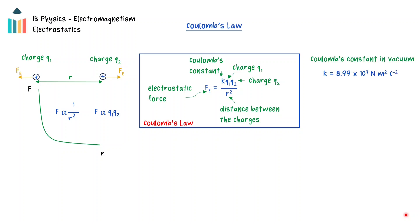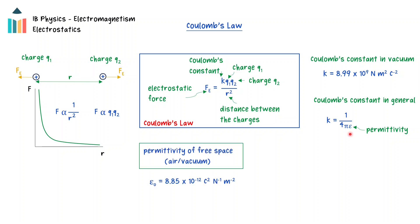Coulomb's constant k in vacuum is 8.99 times 10 to the 9 Newton meter squared per Coulomb squared, but will change if the charges are in a different medium. Coulomb's constant is defined through the equation k equals 1 over 4 pi epsilon, where epsilon is the permittivity of the medium. The permittivity is a physical constant for a substance and is related to its ability to allow electric fields to pass through the material. The permittivity of free space, which is essentially equal to that of air, is 8.85 times 10 to the minus 12 Coulombs squared per Newton meter squared. If the point charges are in a different medium, Coulomb's constant must be calculated using the permittivity for that medium. For example, the permittivity of water is 7.8 times 10 to the negative 10 Coulombs squared per Newton meter squared, so in water Coulomb's constant k would be a smaller value.